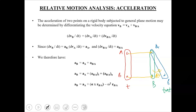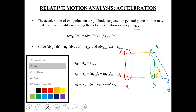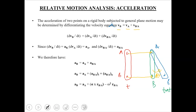The relative velocity equation was written as VB = VA + VBA, where VB and VA represent the absolute velocities of points A and B, and VBA represents the relative velocity of B with respect to A. Now in order to perform the acceleration analysis, we are going to differentiate this equation with respect to time. The first term becomes DVB/DT, the second DVA/DT, and the third DVBA/DT.